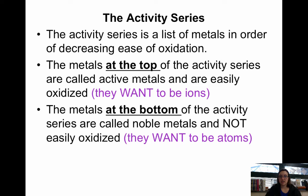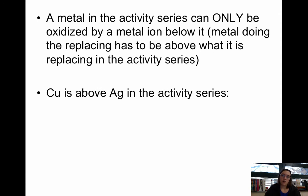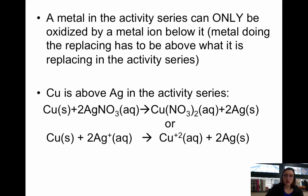Think about the activity series as how lazy they are. The ones at the top are very active, they want to be ions. The ones at the bottom are lazy, they want to be atoms. They don't want to have to put any work in. A metal in the activity series can only be oxidized by a metal below it. The metal doing the replacing has to be above what it is replacing in the activity series. Copper is above silver in the activity series, so the copper will replace the silver. If you need a refresher on the activity series, take a look at 4.4 in your book. That goes through the activity series again and shows you the activity series table.